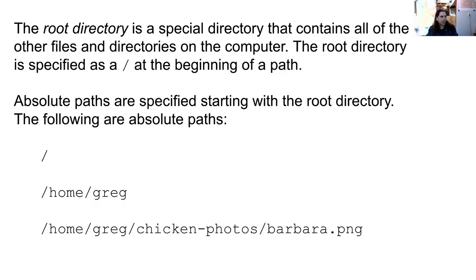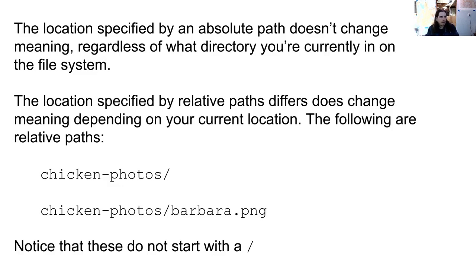I've got three examples listed here. The first one specifies the root directory itself. The second specifies a special directory — my home directory on the file system — which would be slash home slash greg. The last one is a file path underneath my home directory, under slash home slash greg, which is a directory where I store photos of my chickens. I have one in there called barbara.png — Barbara is one of my chickens.